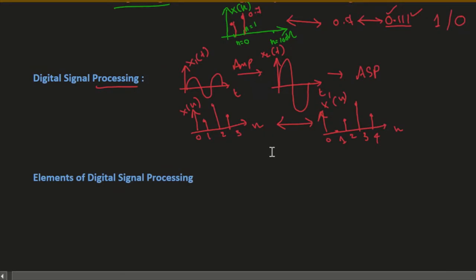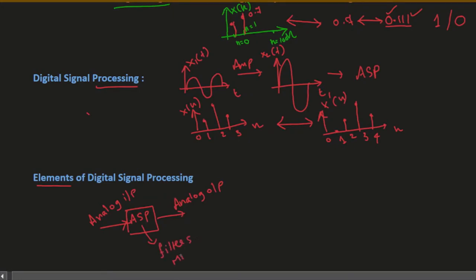In order to do analog or digital signal processing, we need certain elements or components. For analog signal processing, we have an analog input — a real-time input — fed into analog signal processing components, which produce an analog output. These analog signal processing components include filters, mixers, and amplifiers.